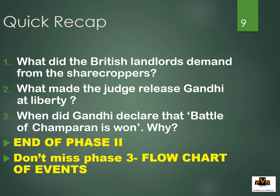We see Gandhian values, activism, and achievement throughout this chapter. Achievement was not merely winning the case — Gandhi's real achievement was lifting people up, teaching them how to fight for themselves, how to be fearless, and how to be self-reliant. Key questions: What did the British landlords demand from sharecroppers? What made the judge release Gandhi? When did Gandhi declare that the battle of Champaran is won?